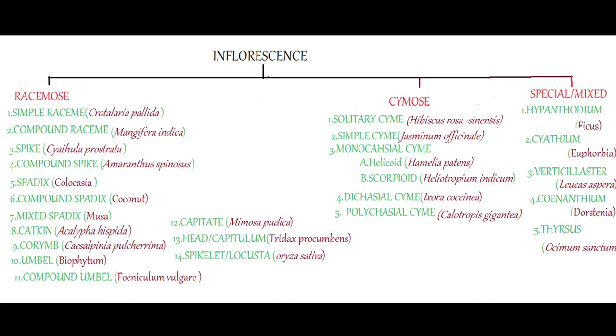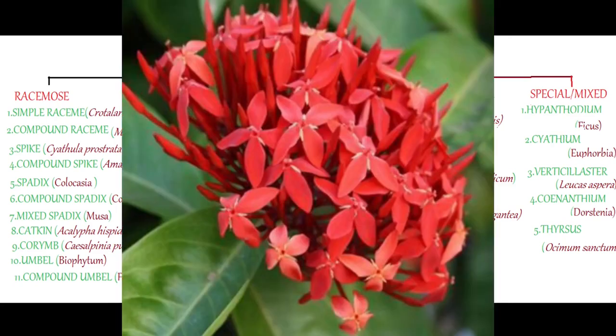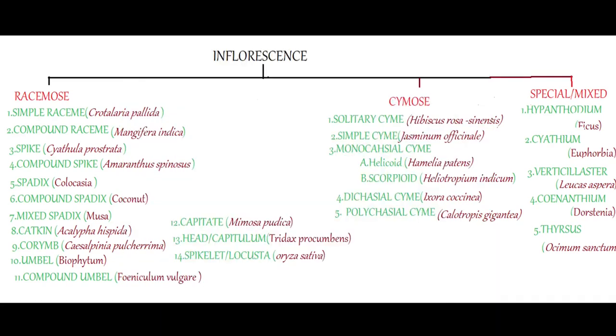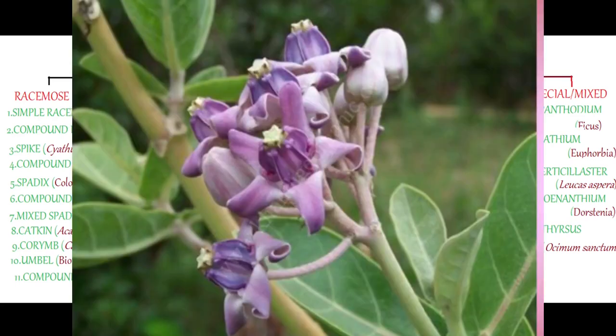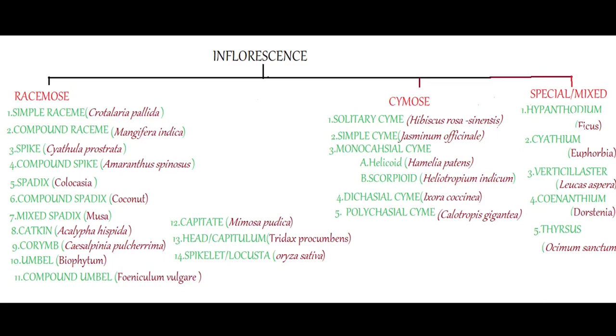The fourth one is dichasial cyme. Here the inflorescence axis ends in a flower. From the base of this flower two lateral branches will arise, which also end in flower buds. From the base of these lateral branches, again branches are formed dichotomously. Example: Ixora and Clerodendron. The last one is polychasial cyme. Here the main inflorescence axis ends in a flower, and from the base of this flower more than two lateral branches will arise, which also end in flower buds. Further lateral branches arise as secondary branches. Example: Calotropis.